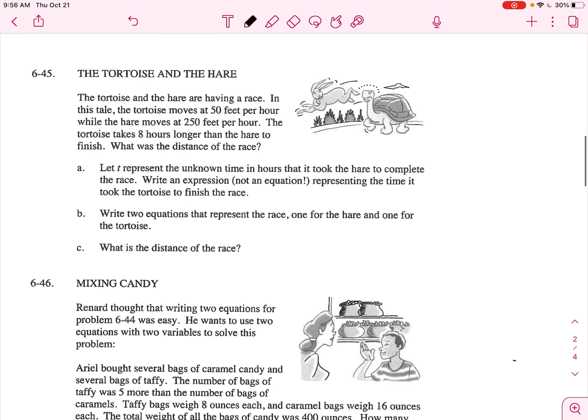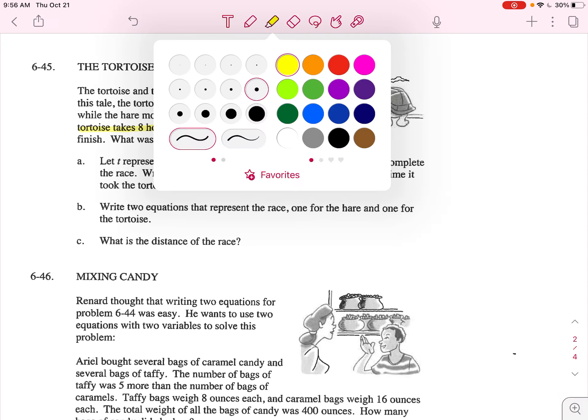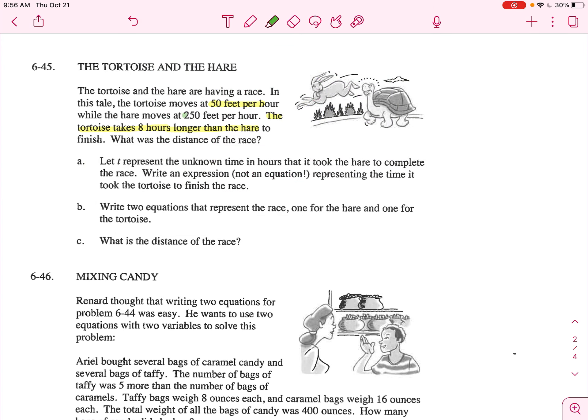A good old tortoise and hare example. They're having a race. The tortoise moves at 50 feet per hour and the tortoise is slower, takes eight hours longer than the hare. And then the hare moves at 250 feet per hour.